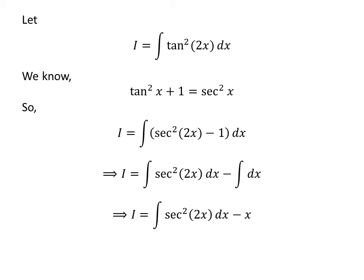Integral of 1 with respect to x is equal to x. So i is equal to integral of square of secant of 2 times x with respect to x minus x.